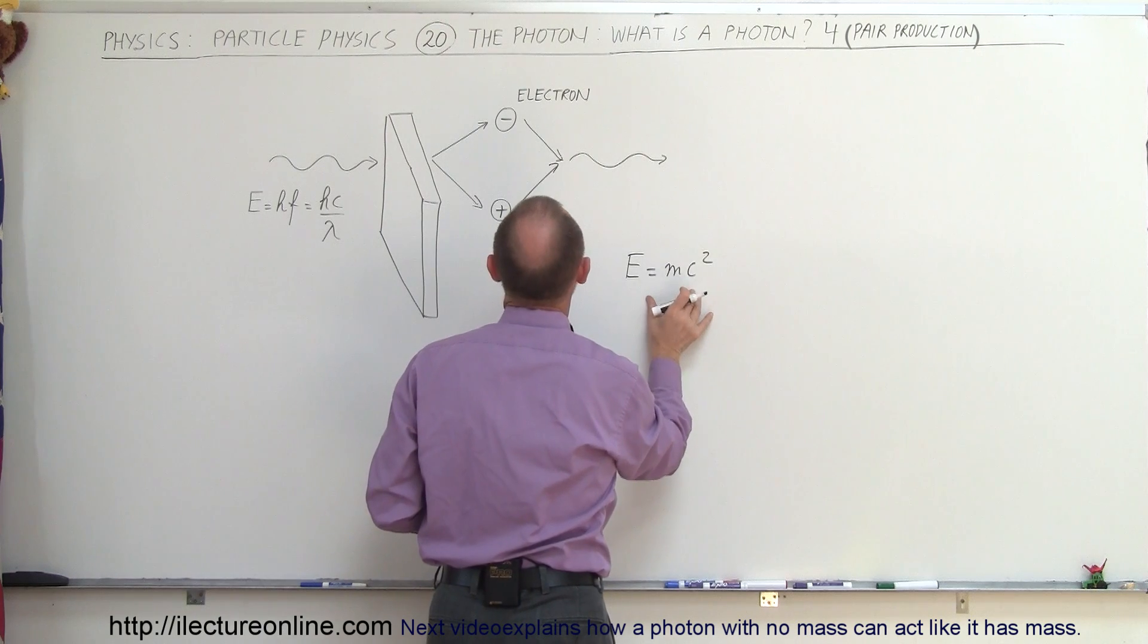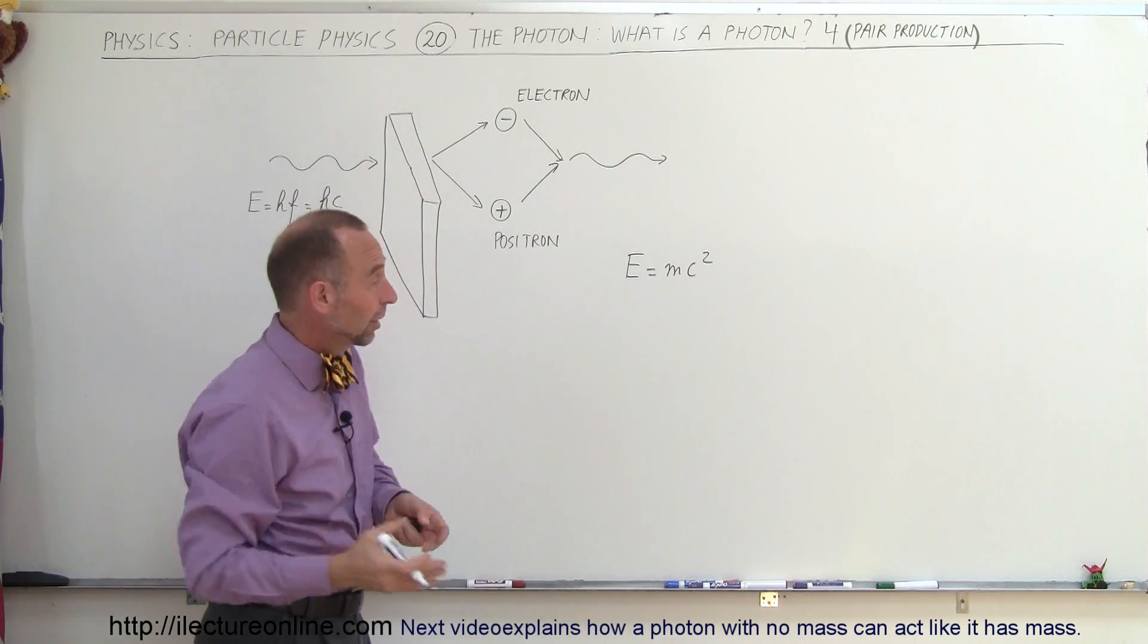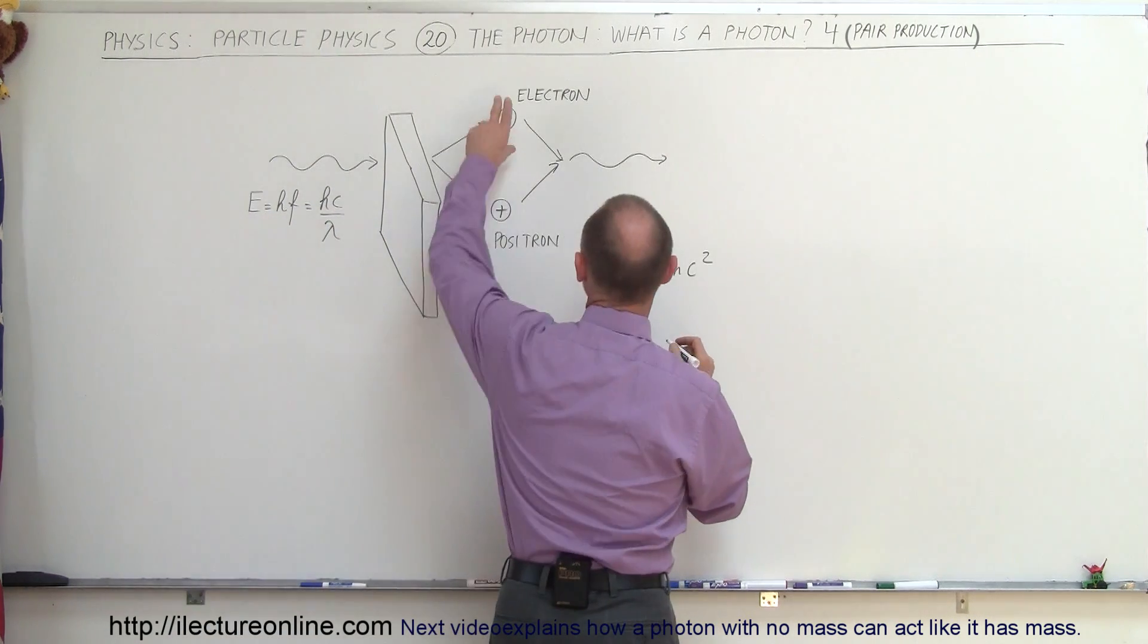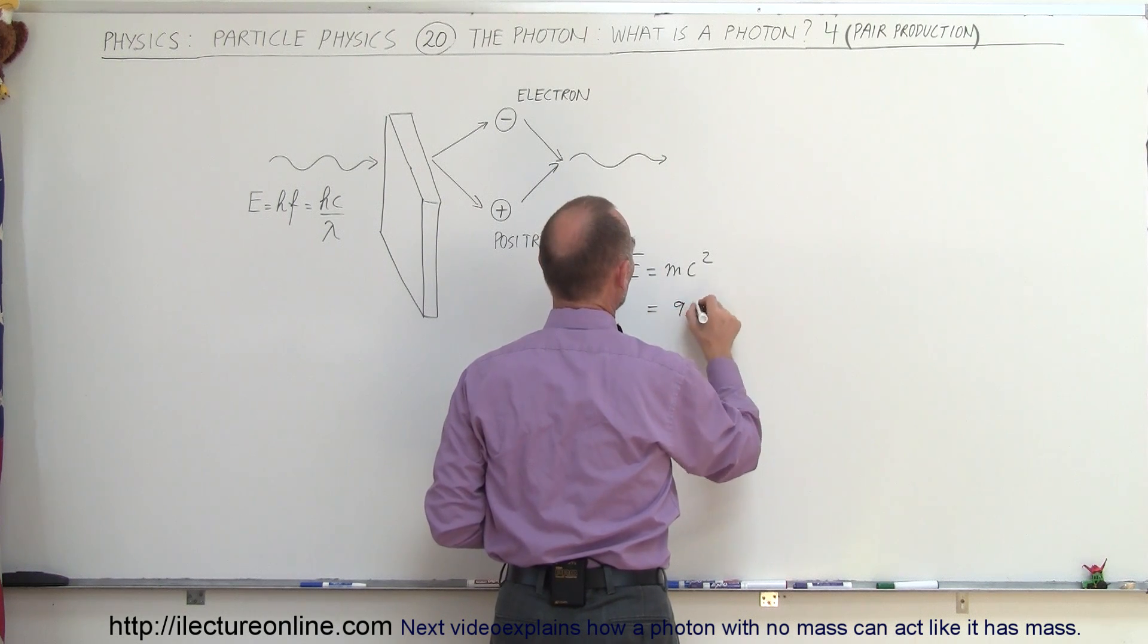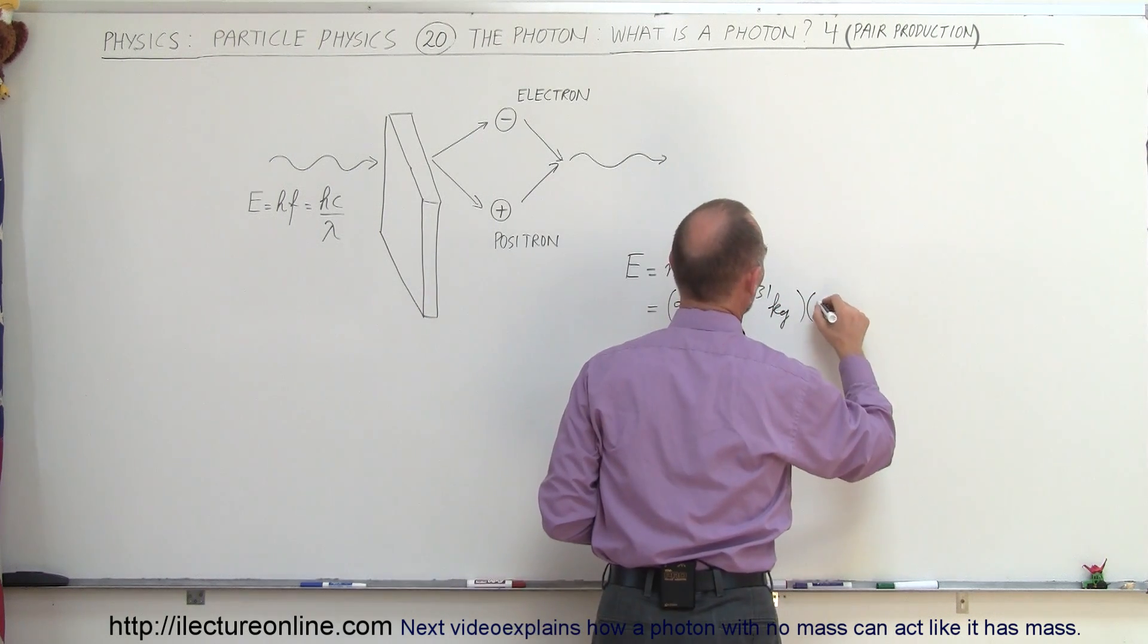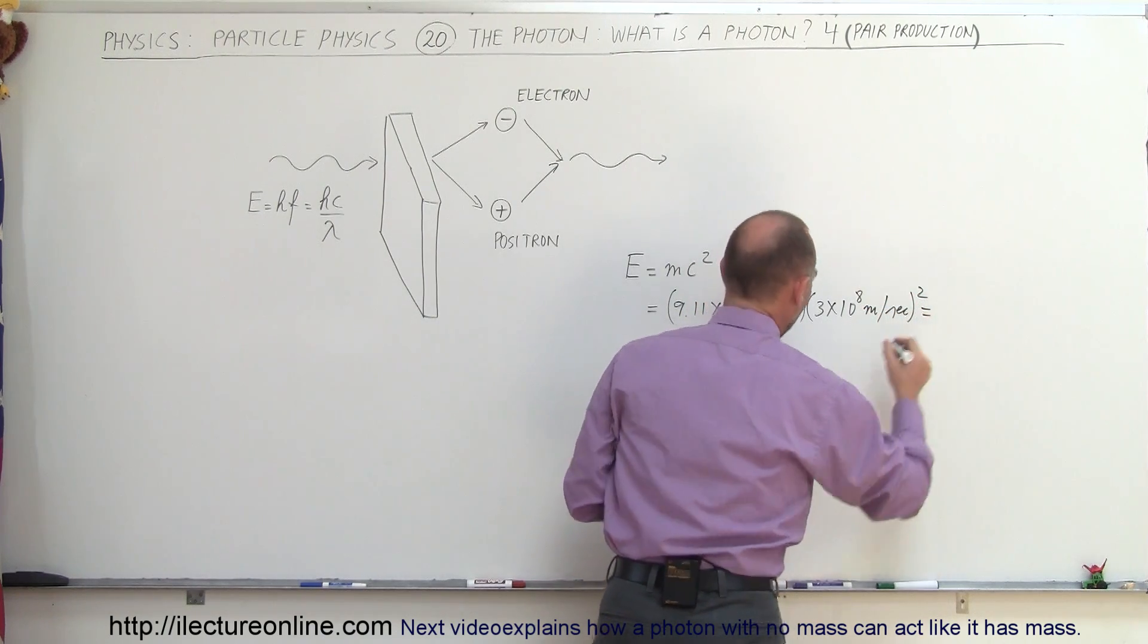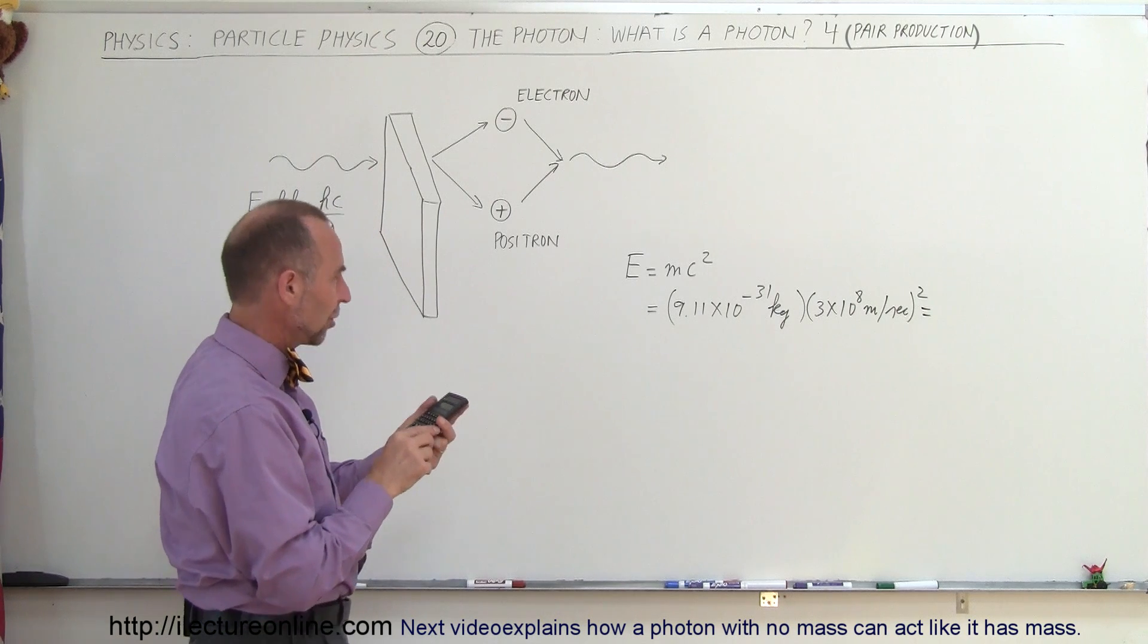So what is the energy required to make an electron, and what is the energy required to make a positron? Well, let's plug in the mass and multiply it times c squared, and that will give us the energy. So to make one electron, for example, that would be equal to the mass, which is 9.11 times 10 to the minus 31 kilograms, and you multiply that times the speed of light squared, 3 times 10 to the 8 meters per second, and you square that, and that will give us the energy required to make a single electron.